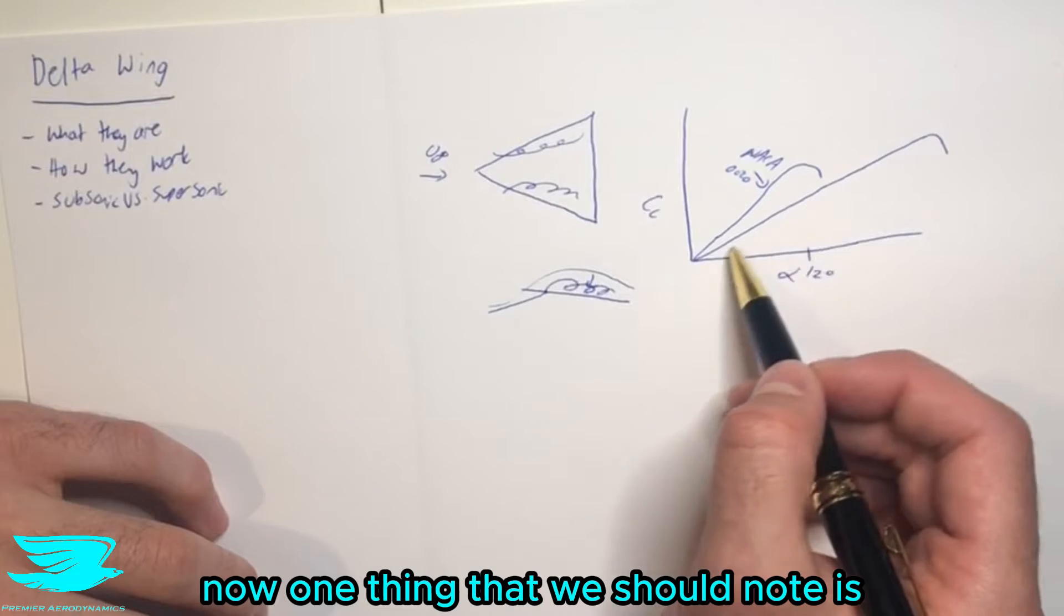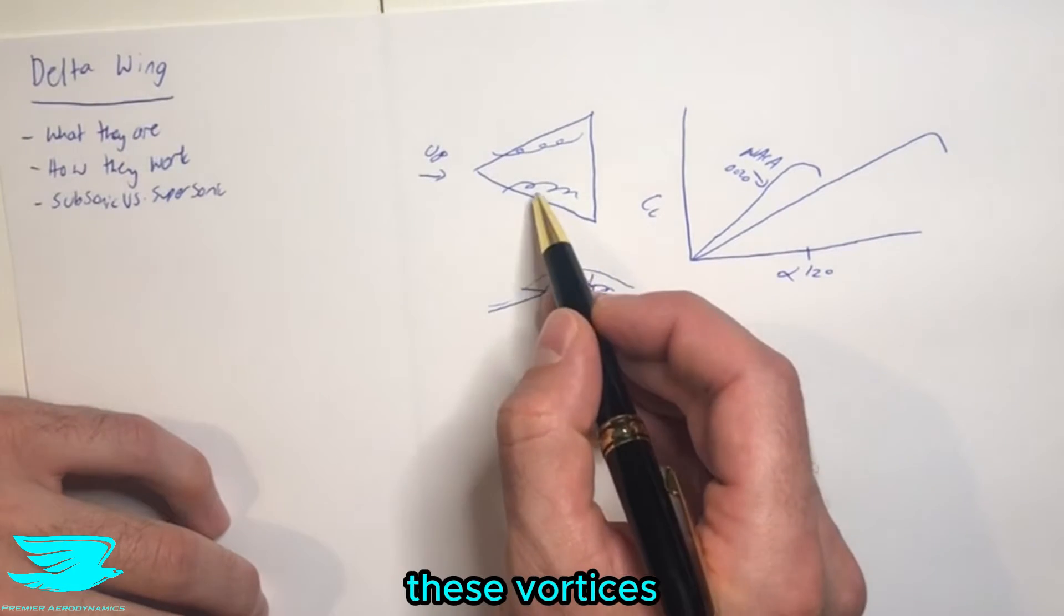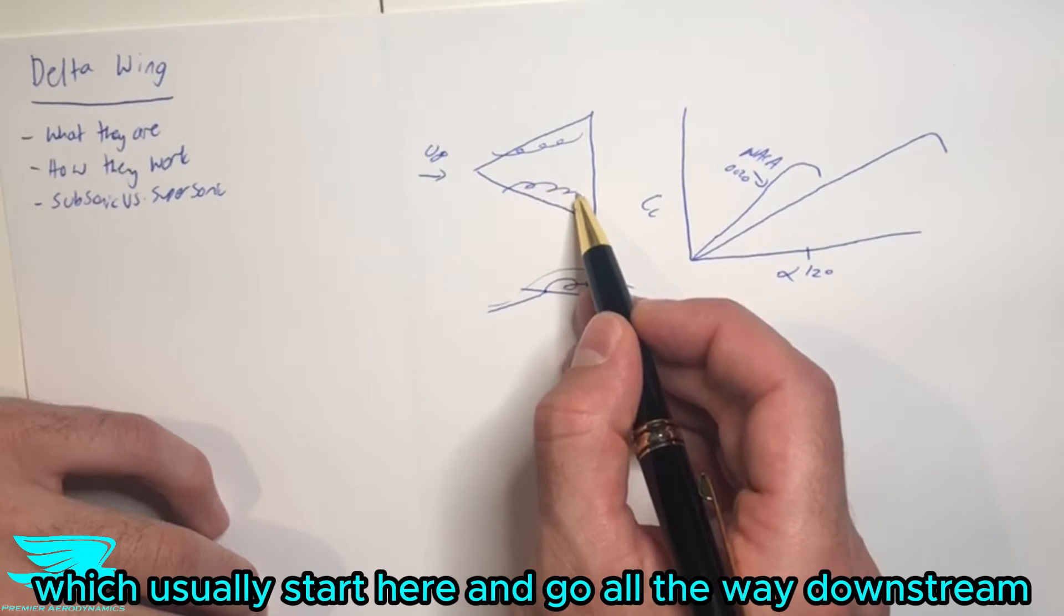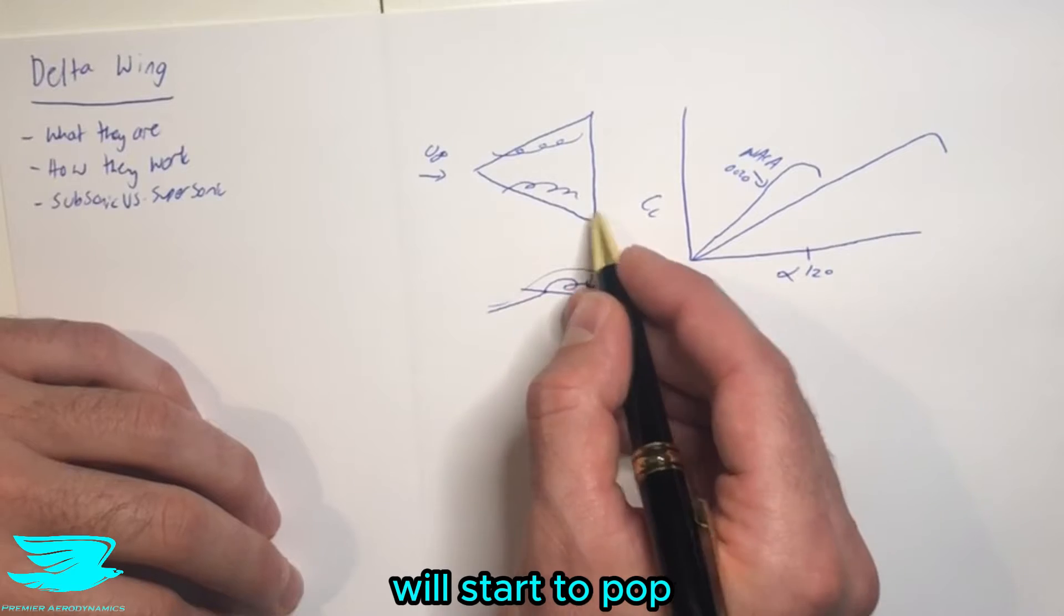Now one thing that we should note is what happens as we increase the angle of attack. Well, as we increase the angle of attack, these vortices, which usually start here and go all the way downstream and even propagate past the trailing edge of the delta wing, will start to pop.